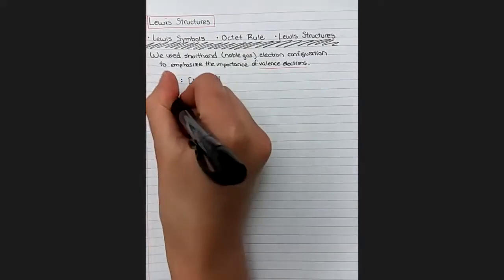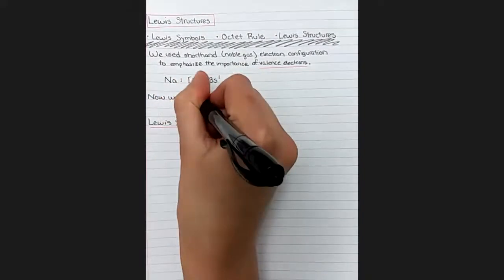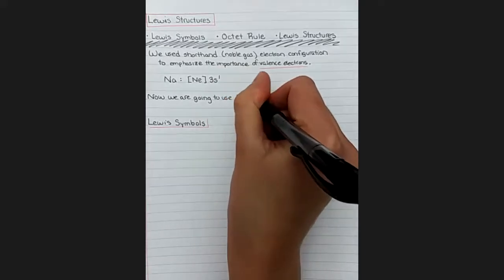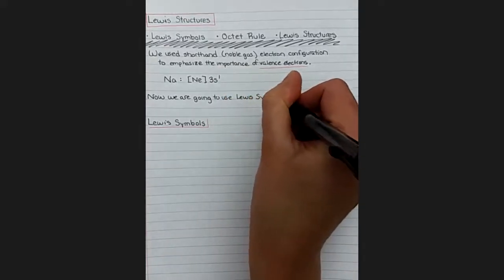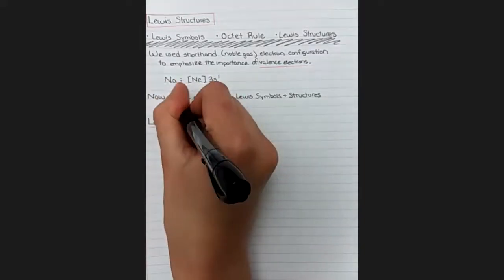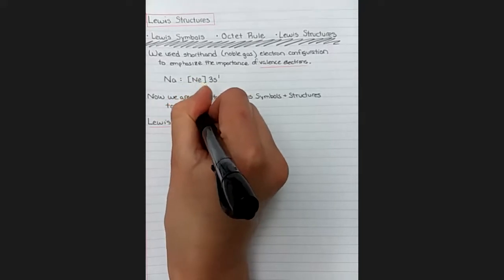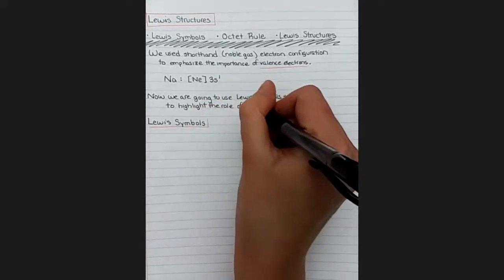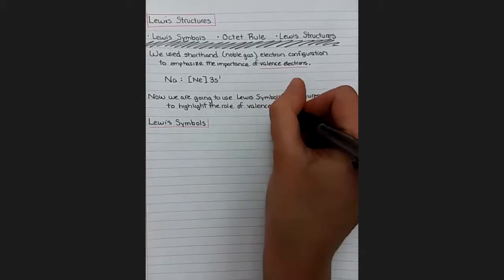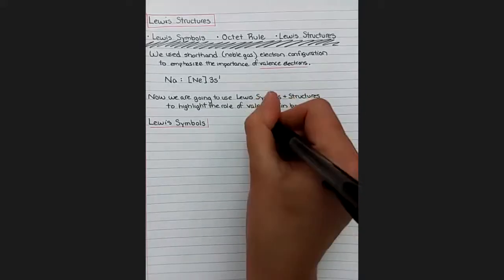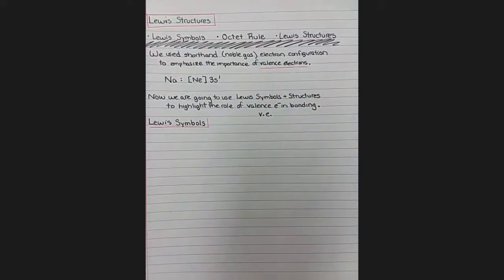So now we're going to use Lewis symbols and Lewis structures to highlight the role of those valence electrons in bonding. Valence electrons are going to be our new favorite thing. We're going to be talking about them a lot, and you might see me abbreviate them by writing V.E. for valence electrons.